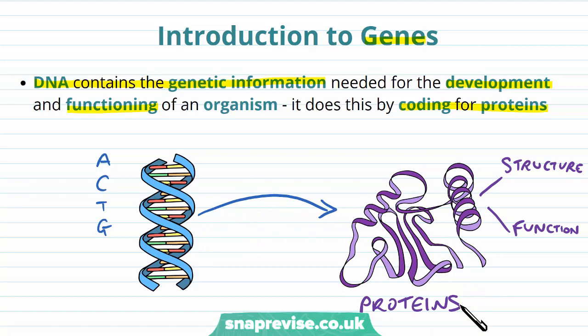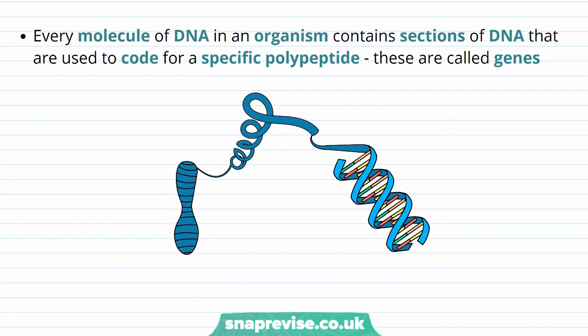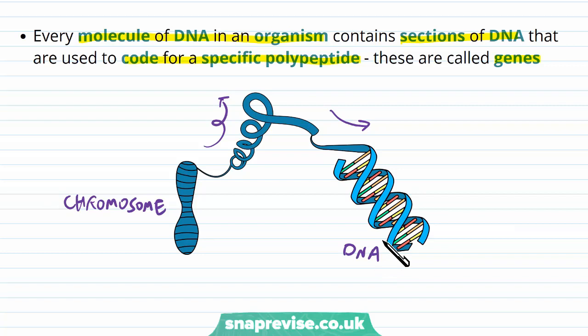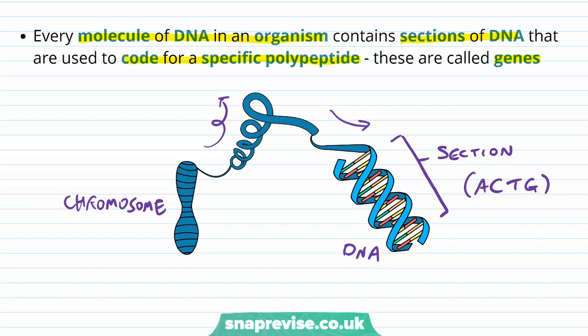Any DNA that's in an organism is a very, very long molecule, and it has different sections depending on what they do. A section of DNA which codes for a specific polypeptide is known as a gene — and this is a really important definition you need to know. So here we've got a chromosome, and as we unwind the chromosome into smaller and smaller detail, we end up with the actual DNA molecule. A section of DNA contains a certain sequence and number of bases — A, C, T's and G's — and a certain section which codes for a particular polypeptide, which is a chain of amino acids, is known as a gene.